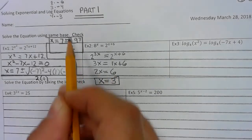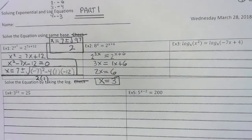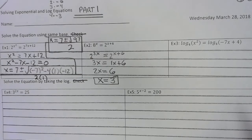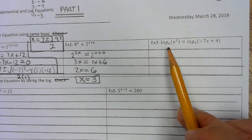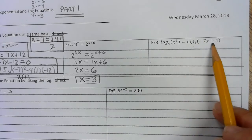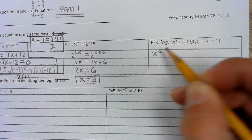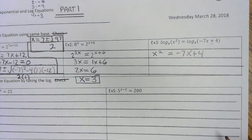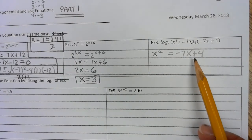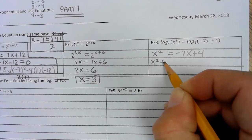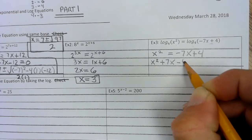Before we go on, for right now we're going to ignore the checked part — we're just going to focus on the solve. Example 3: these both have a log base 4, so the bases are the same, so we know that these are equal. So we have x squared equals negative 7x plus 4. We're going to solve by moving everything to one side — add 7x and subtract 4 — so you have x squared plus 7x minus 4 equals 0.